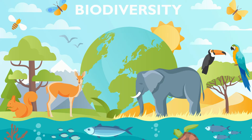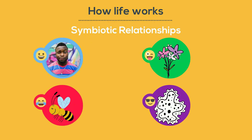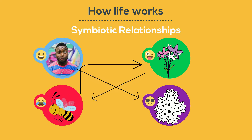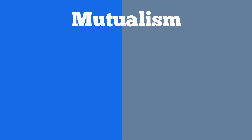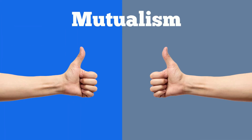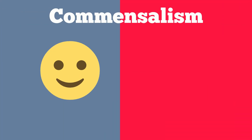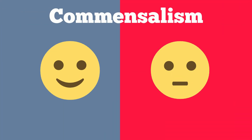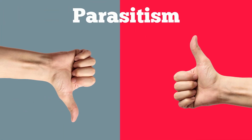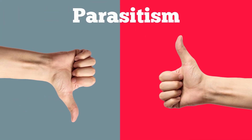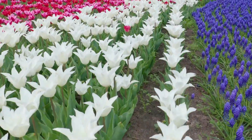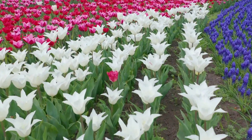Life on Earth is amazing, diverse, and full of relationships. Symbiotic relationships are close relationships between different species. Three common examples include mutualism, in which both species benefit; commensalism, in which one species benefits and the other is neither hurt nor harmed; and parasitism, in which one organism benefits and the other is harmed. So let's take a look at some symbiotic relationships from the plant kingdom.